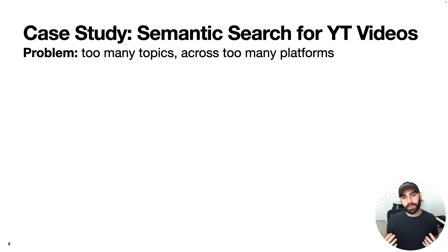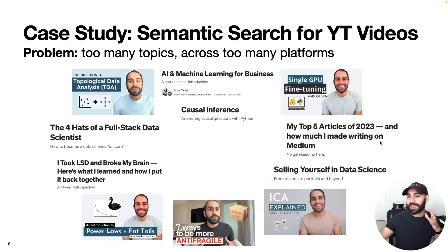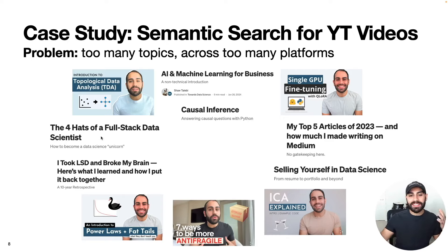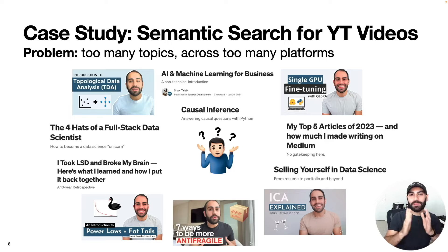Since I'm just talking about whatever's interesting to me, it might be difficult for people to navigate all the different pieces of content I make across these two platforms. I talk about things from topological data analysis, AI for business, causal inference, how much I made writing on Medium, how to get a data science job, philosophical things like what it means to be anti-fragile, personal things like my struggles with anxiety, and now this series on becoming a full-stack data scientist. So someone seeing this content for the first time might have trouble finding the content most relevant to them.